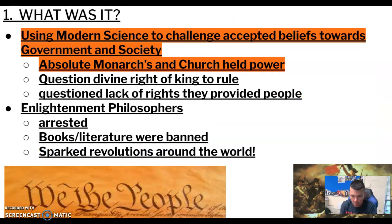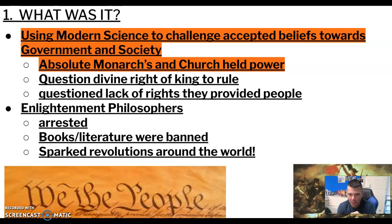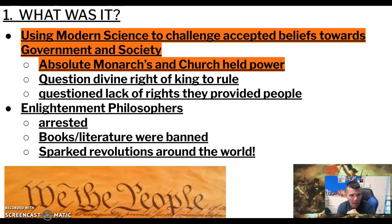The area highlighted in orange is the key part you need. Using modern science to challenge accepted beliefs about government and society — so the Enlightenment focused on government and societal issues like human rights. Again, they questioned the monarch — a king — and the church. These people questioned absolute monarchs and the church's power. They wanted to find truth for themselves, questioning whether the king should have divine right of rule — God-given authority — and also questioning the lack of rights being provided to the people.